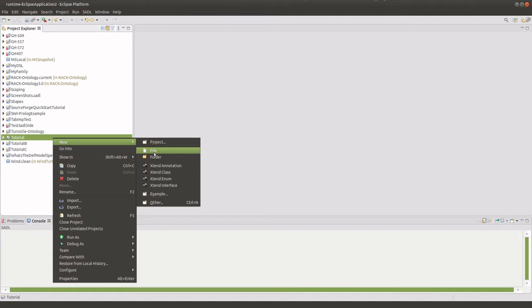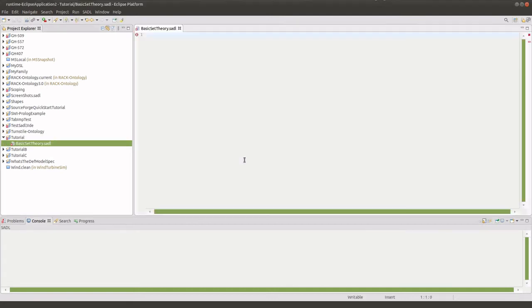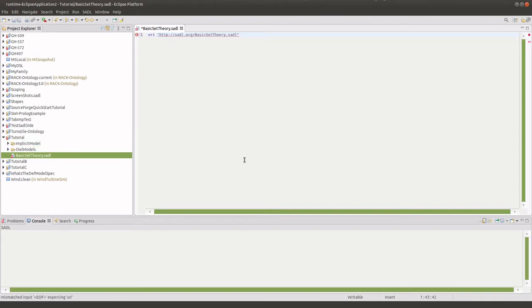Our next step is to create a new file, and we'll name this basic set theory. And it'll have a .sadl extension for saddle.